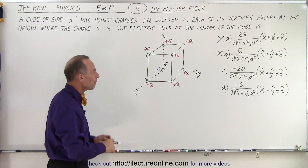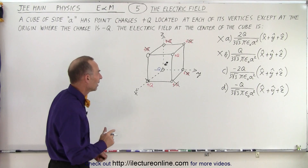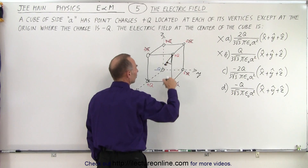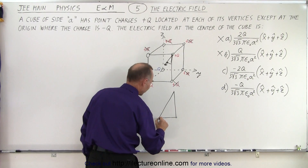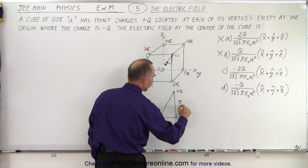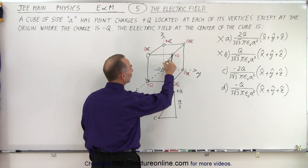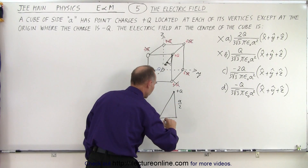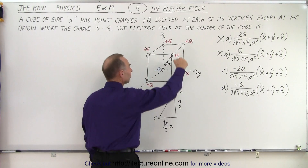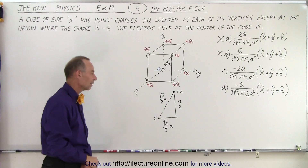To find the magnitude of the electric field — so we know it's answer C or D — we can draw a little triangle. The center of the cube is here, the corner where we have plus Q is here, and halfway down is A over 2. The dimension from the center of the cube to the side is the square root of 2 over 2 times A. Since it's diagonal, the hypotenuse has to be the square root of 3 over 2 times A. So the relative dimensions can be written that way.